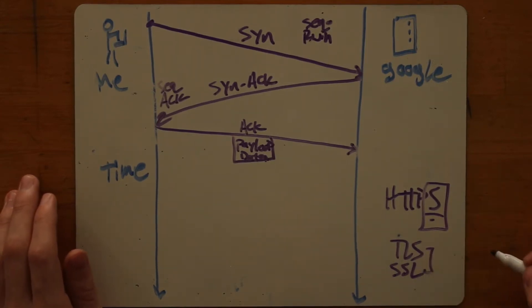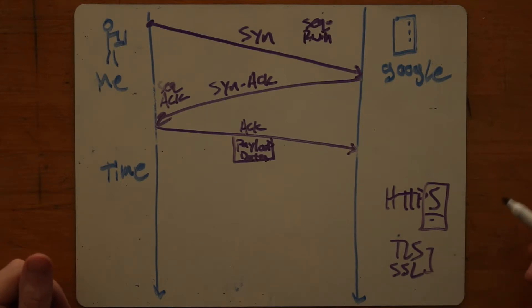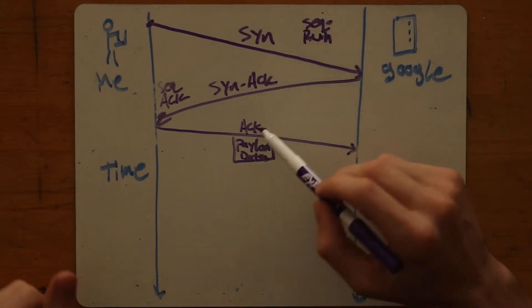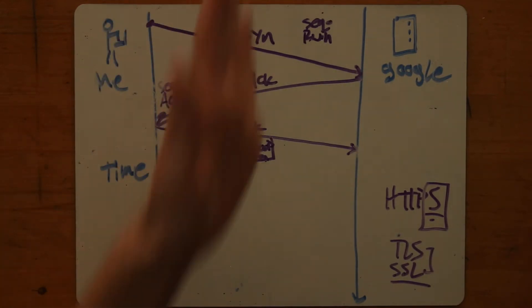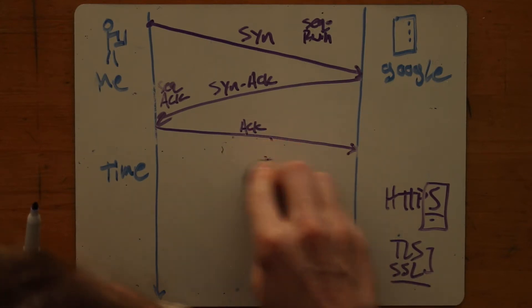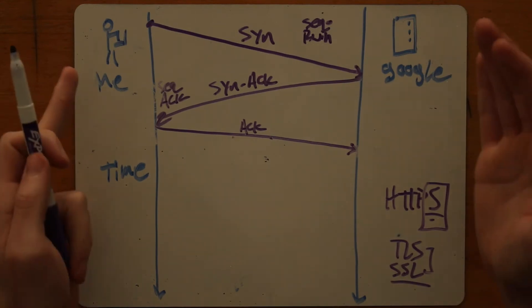So there's another handshake that we have to do to get encryption, which is what Transport Layer Security offers us, and that's what the S in HTTPS stands for. It used to stand for SSL, but now it stands for TLS. That's confusing. Don't worry about it. We'll talk about it in the next video. But the first bit of payload data can be sent along with the acknowledgement.